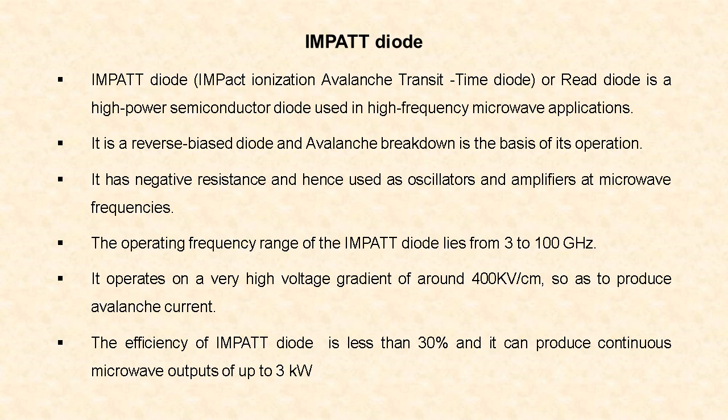The IMPATT diode is a transit time device, meaning it is a high frequency device that operates at or above microwave frequencies. IMPATT diode is also known as Read diode. IMPATT is the abbreviation of Impact Ionization Avalanche Transit Time diode. It is a high power semiconductor diode used in high frequency microwave applications.